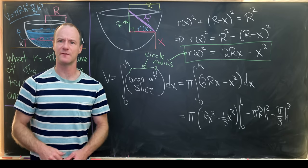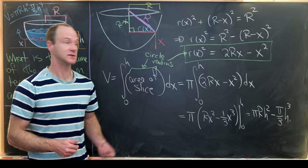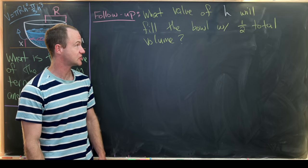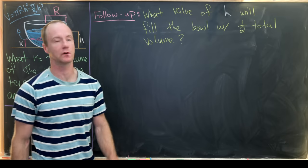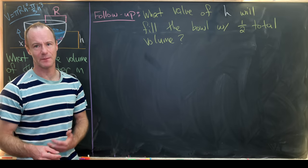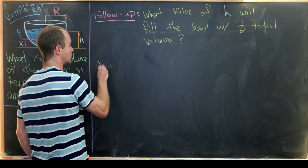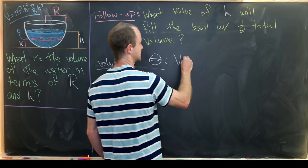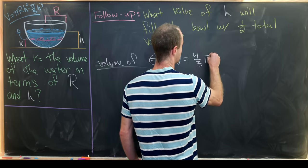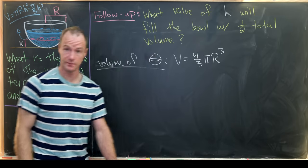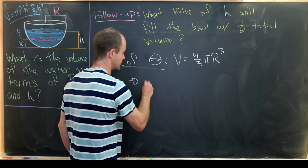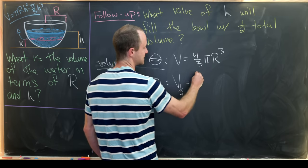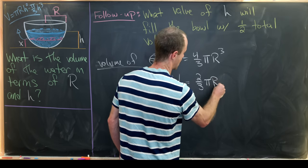And now before I leave you guys, I'm going to set up a follow-up video that builds off of this result. But I need to clean up the board first. So I think a nice follow-up to this problem would be to find the value of h which will fill the bowl to half the total volume. So let's set that up and then we'll solve it in an upcoming video. The volume of a sphere is V equals 4/3 πR³. But that means that the volume of a hemisphere will be exactly half of that. So that'll be 2/3 πR³.